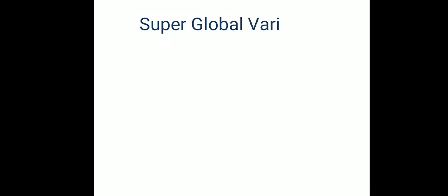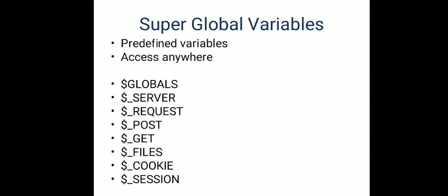In this video lecture we are going to study PHP superglobal variables. A superglobal variable is a predefined variable available in PHP that is always accessible from anywhere — any function, class, or file — without writing any special code, regardless of scope. Some superglobal variables available in PHP are: $_GLOBALS, $_SERVER, $_REQUEST, $_POST, $_GET, $_FILES, $_COOKIE, and $_SESSION.